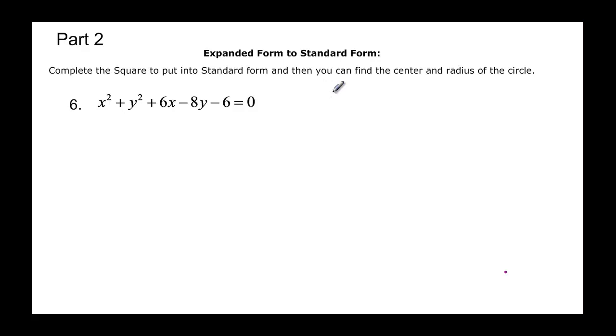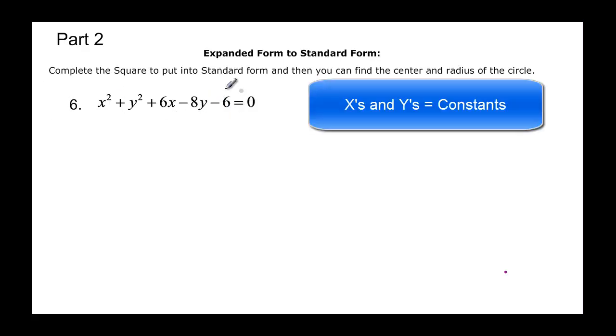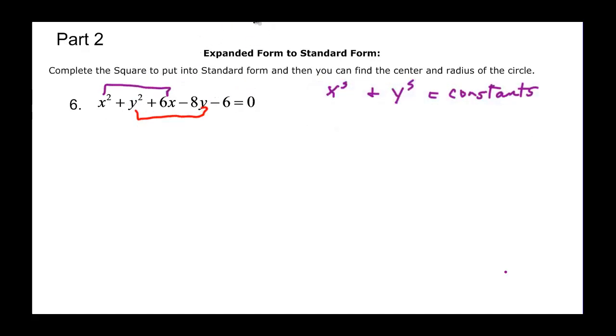First thing we want to do here is we want to get the x's together and y's together, and then we want it equal to any constants that we have. So we want to move all the constants to the other side. So we need to take the 6 and put it to the other side and then I need to group these two things together, and then I need to group these two things together.